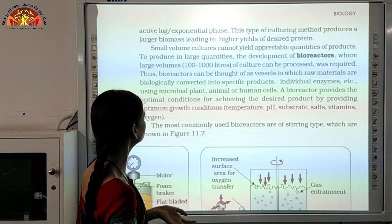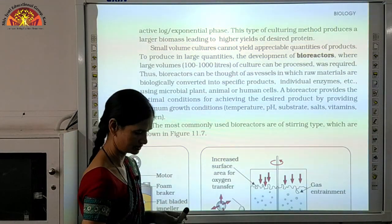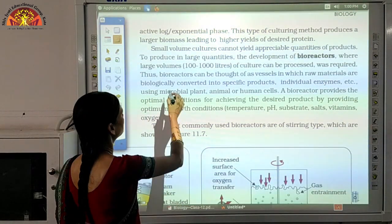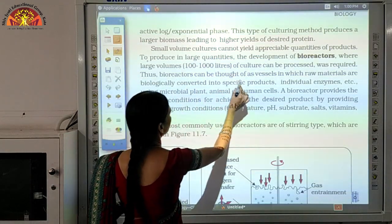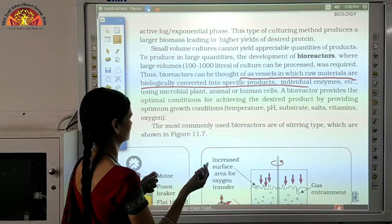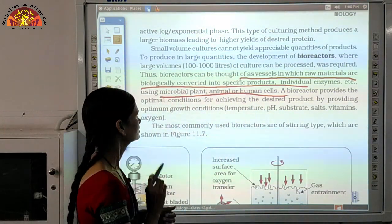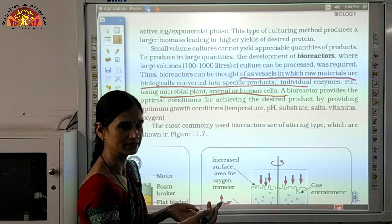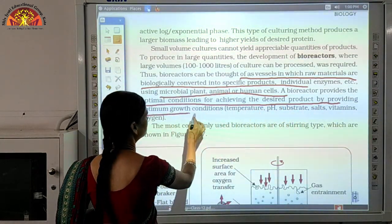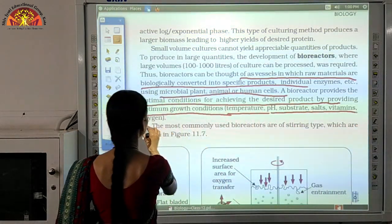Bioreactors are large vessels in which raw materials are biologically converted into specific products, using microbial, plant, animal, or human cells. These bioreactors provide optimal conditions for achieving the desired product by providing optimum growth conditions — which include proper temperature, pH, substrate, salts, vitamins, and oxygen.